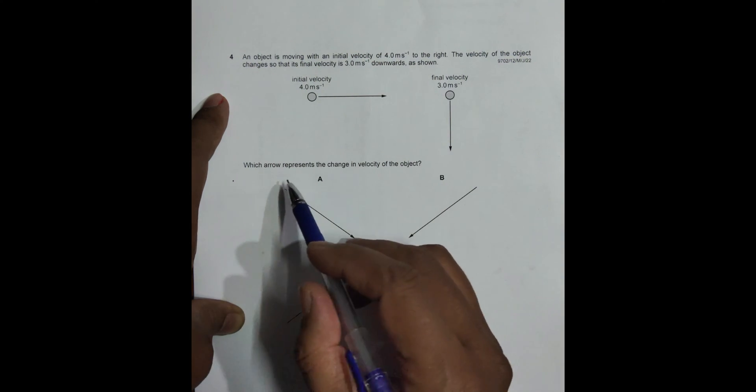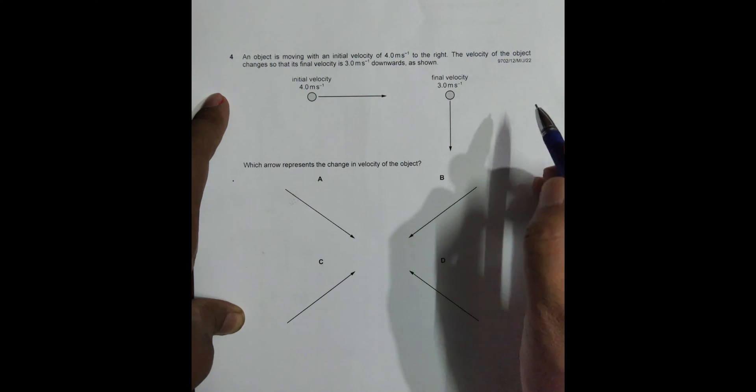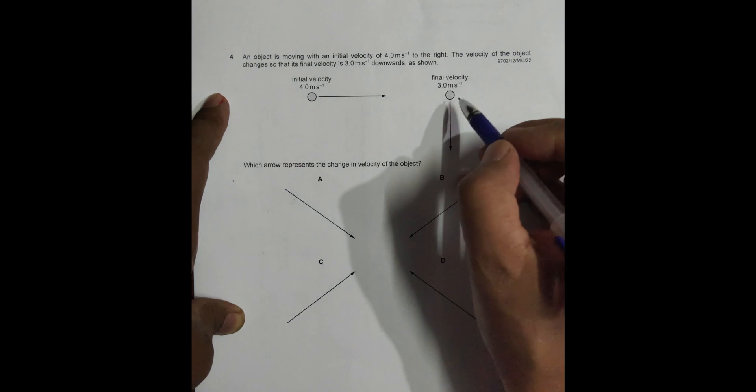Now we have to say which arrow represents the change in velocity of the object. So change in velocity - the change in velocity should be equal to this velocity minus this.